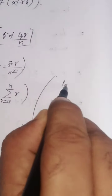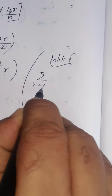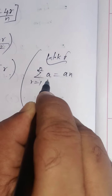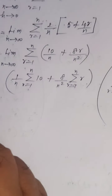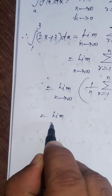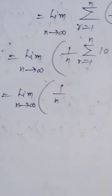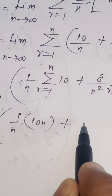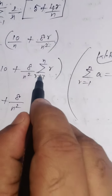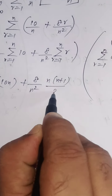We know that sigma r equals 1 to n of a constant equals a times n. Here, a is 10. So limit n tends to infinity: (1/n) times 10n, plus (8/n²) times sigma r equals 1 to n of r. For sigma r equals 1 to n of r, we can directly write n(n+1) by 2.